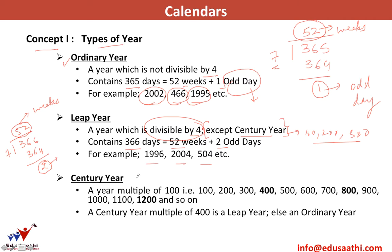The third type is century years — like 100, 200, 300. These are divisible by 4 but not all are leap years. For century years, the added condition is that the century year must be divisible by 400. So for a non-century year, divisibility by 4 applies; for a century year like 1200, 800, or 900, divisibility by 400 is the rule.